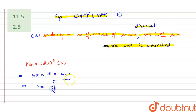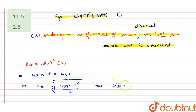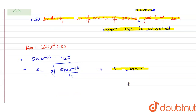From here we can find the value of s: s equals the cube root of (5 × 10⁻¹⁶ divided by 4). On solving, we get the molar solubility s = 5 × 10⁻⁶.